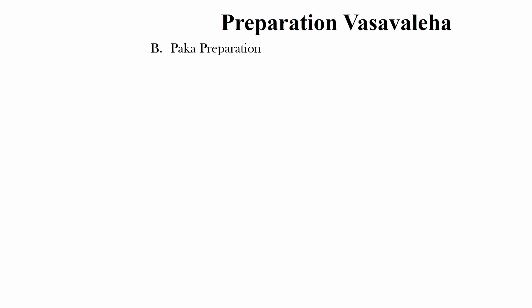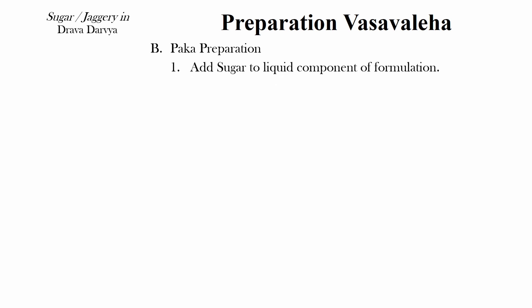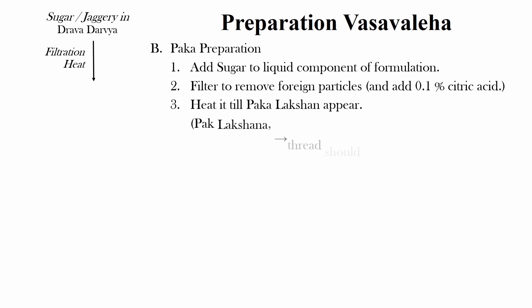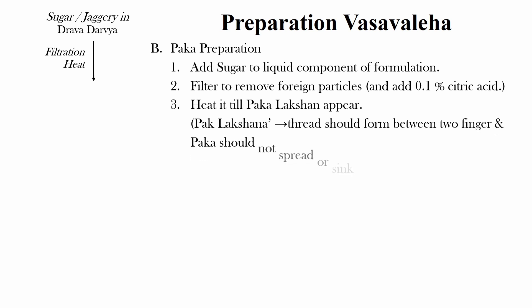The next step is preparation of Paaka. Add sugar to the liquid component of formulation, filter to remove foreign particles, and add 0.1% citric acid if needed. Heat it till Paaka Lakshana appears. Paaka Lakshana means a thread should form between two fingers and the Paaka should not spread or sink in water.